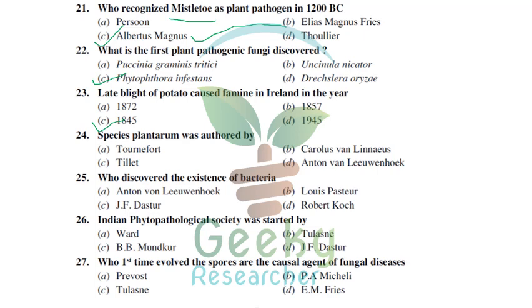'Species Plantarum' was written by Carolus Linnaeus, who is also considered the father of taxonomy. He wrote 'Systema Naturae' and 'Species Plantarum.' The existence of bacteria was first discovered by Antonie van Leeuwenhoek. The Indian Phytopathological Society was started by B.B. Munkur. P.A. Michele was the first to prove that spores are the causal agents of fungal diseases.